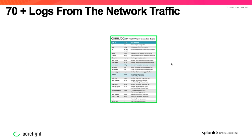What do Zeek logs look like? Zeek generates dozens of logs, and each log is tailored for a specific purpose. At the center is the connection log — the conn log — which provides connection visibility: IP addresses, ports, bytes transferred, and the length of a connection. Most importantly, each connection log is given a unique ID, which is used to correlate more detailed information about the connection in other logs.